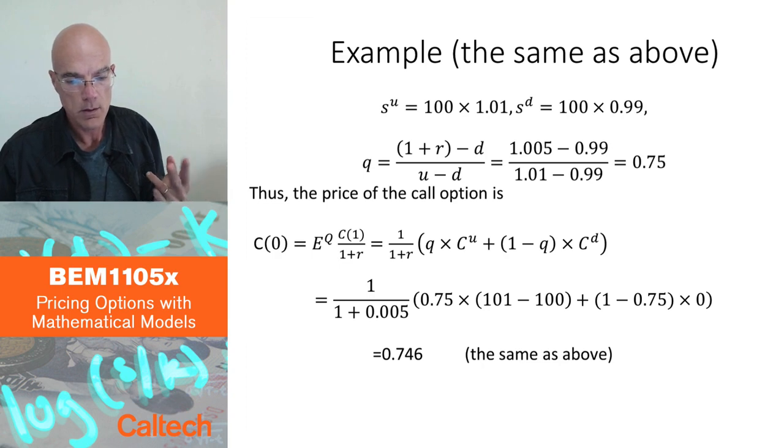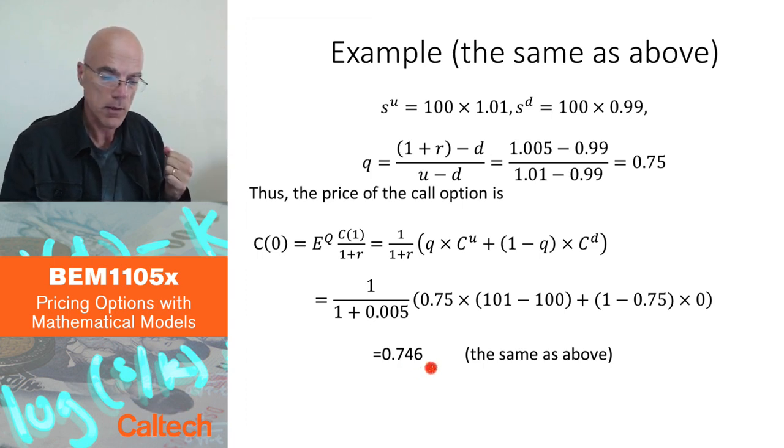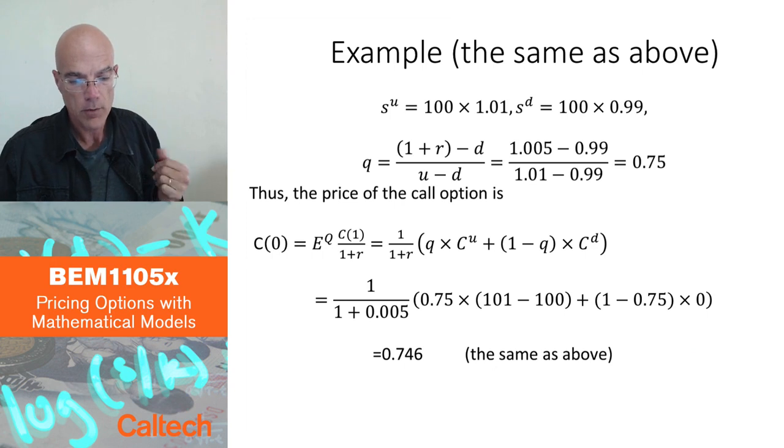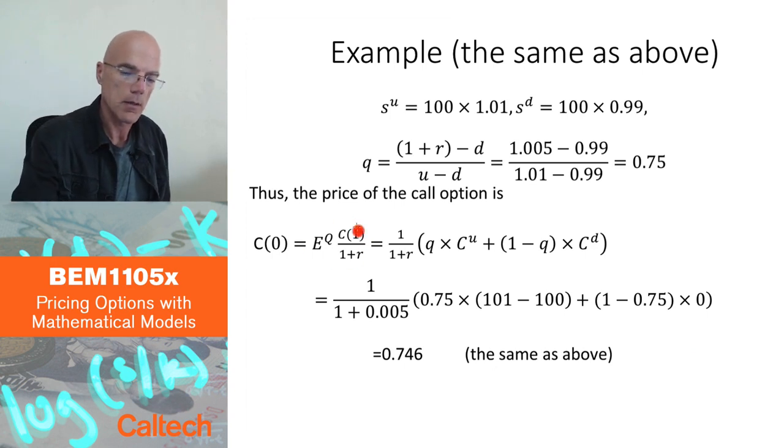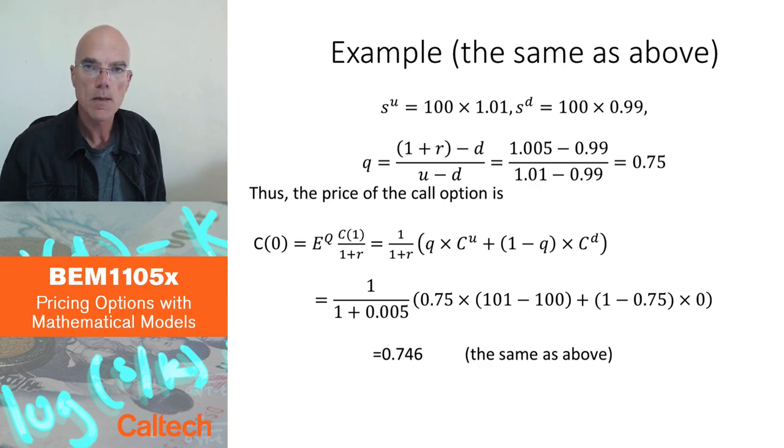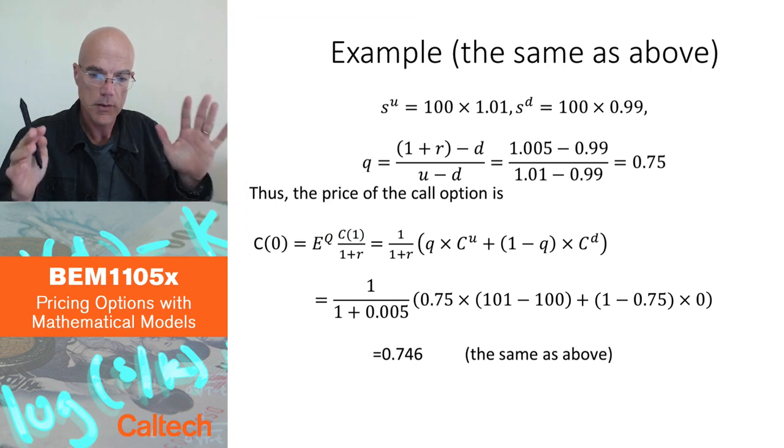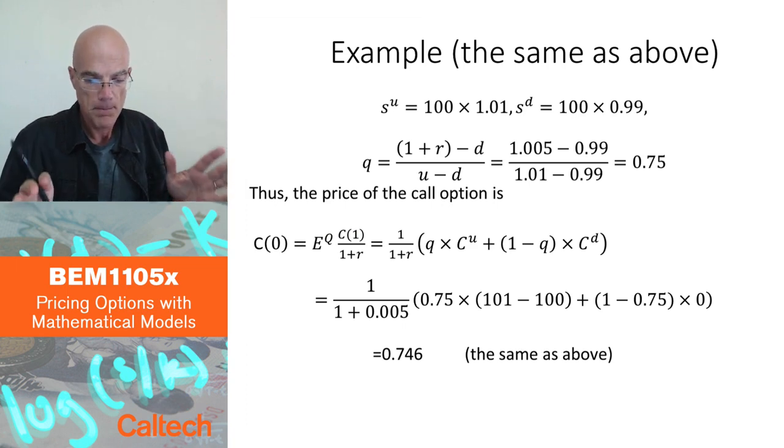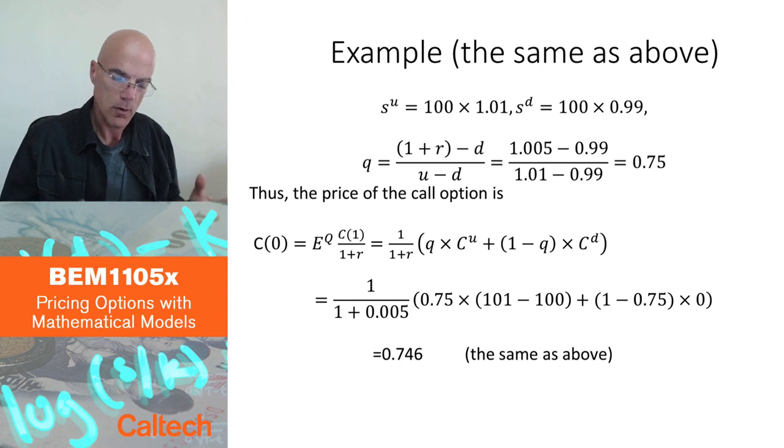One is the replication argument. I can actually replicate the payoff 1 or 0 in this model. And then the cost of replication, which is 0.746, has to be the price. But actually, that same value can be obtained as the expected value of the discounted claim under the Martingale product. So all the economics of option pricing is in these slides that we have just done. Everything else is just going to be more complicated and more realistic, more sophisticated mathematical models.